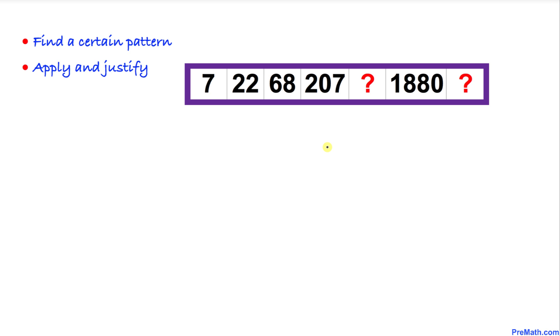So let's go ahead and get started with the solution. Here's the very first thing we are going to do: we will look for a certain pattern, and then we are going to apply and justify. Now if we look very closely, we can see there's a multiplication involved.